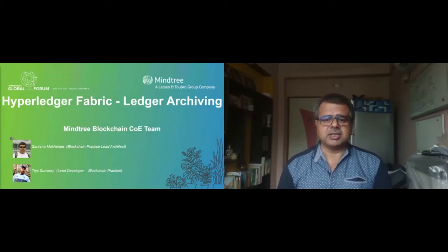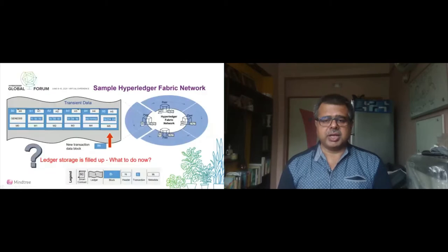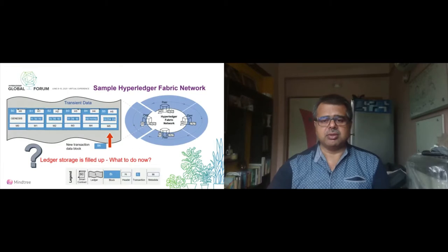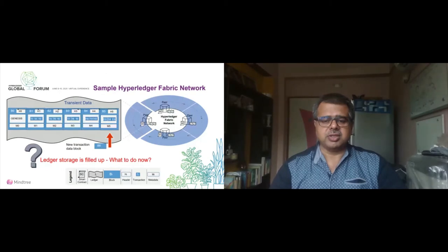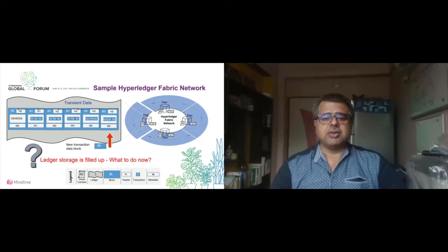Let's see what exactly ledger archiving is. To showcase this, we have created a Fabric network of four organizations, and in each organization there is one peer. As part of the peer, the ledger is also part of that peer. In the ledger we have two different types of storage: one is the transient DB and then the world state DB.